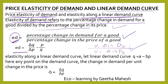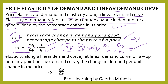Elasticity of demand can be written as delta Q divided by delta P, into P divided by Q. Delta Q means change in quantity — that is new quantity minus old quantity. Delta P is new price minus old price. P is the original price and Q is the original quantity.